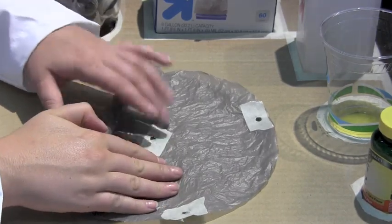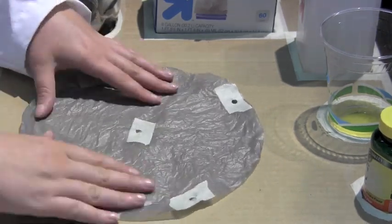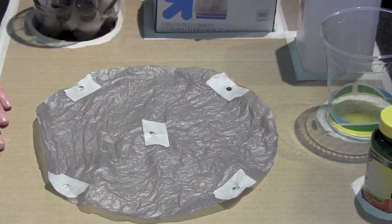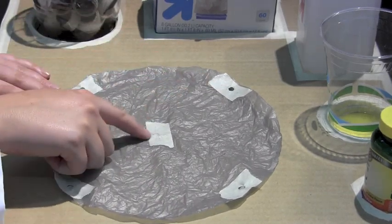After you've punched your hole, again smooth and flatten your parachute. You should now have five holes.